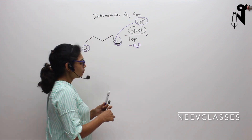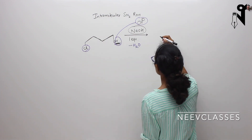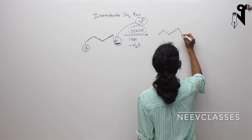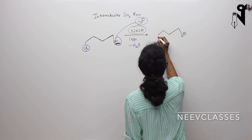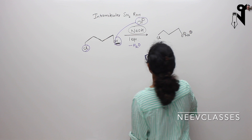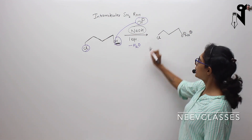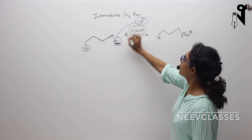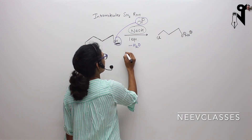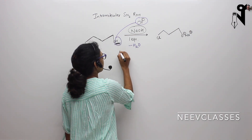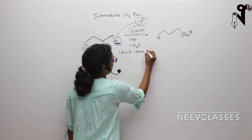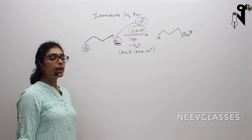So what we will be left with? We will get O- and Cl and Na+ over here. Cl is as it is. Hydrogen has been taken by OH- by acting as a base and the reaction which is happening is an acid-base reaction.